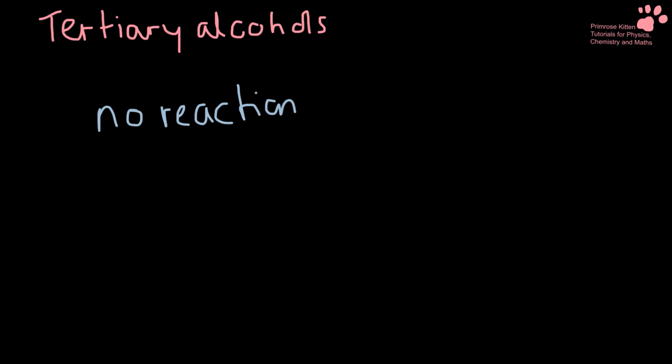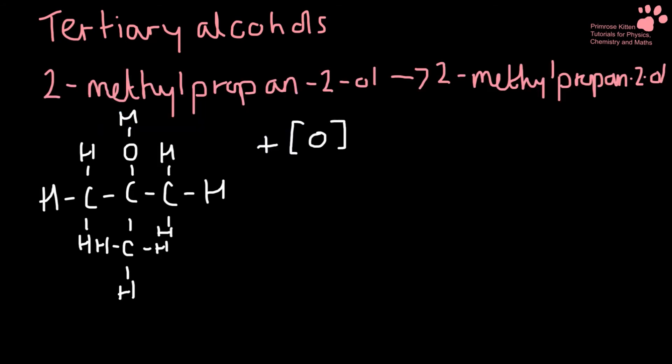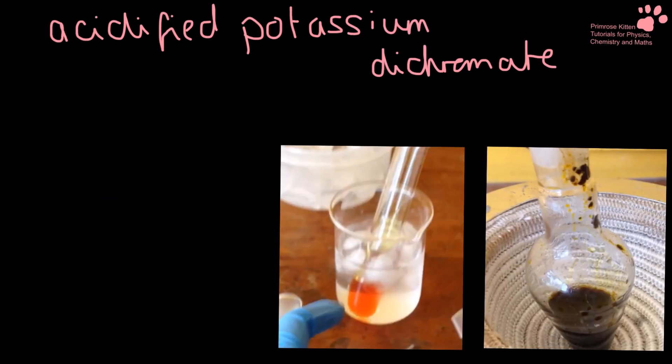Tertiary alcohols give no reaction because there are no hydrogens for the oxidising agent to steal. The oxidising agent could take this one, but then there is nothing else for it to do — there is nowhere for it to add in. So there is no reaction. You also need to know the colour change for acidified potassium dichromate: it will go from orange to green.